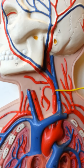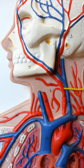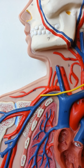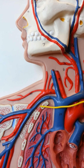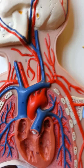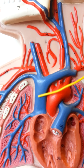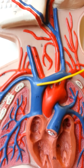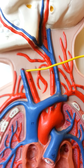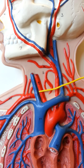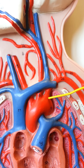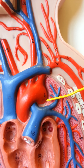The jugular vein, the subclavian artery, and the subclavian vein, the superior vena cava, the common carotid artery, the aortic arch, the thoracic descending aorta.